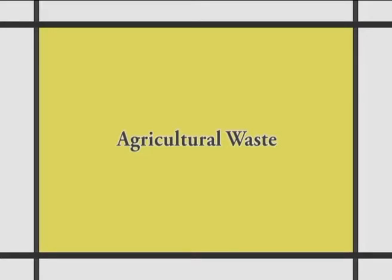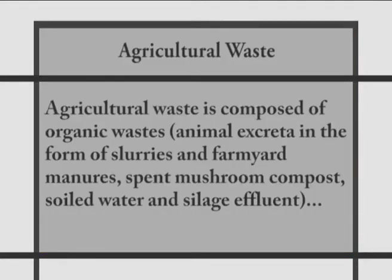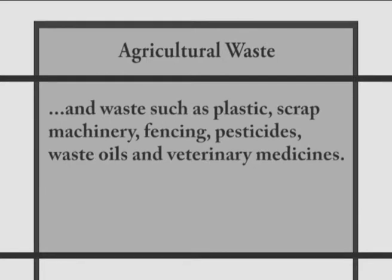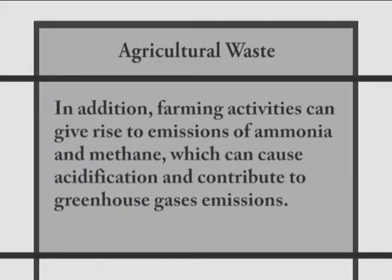Looking at agricultural waste: Agricultural waste is composed of organic wastes — i.e., animal excreta in the form of slurries and farmyard manures, spent mushroom compost, soiled water and silage effluent — and wastes such as plastic scrap, machinery, fencing, pesticides, waste oils and veterinary medicines. There are a number of potential environmental impacts if agricultural waste is not properly managed. Runoff of nutrients to surface waters can cause over-enrichment of the water body. Leaking and improper storage can also pose serious threats to surface waters. In addition, farming activities can give rise to emissions of ammonia and methane, which can cause acidification and contribute to greenhouse gas emissions.